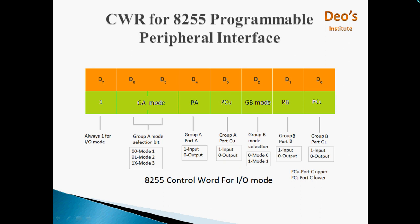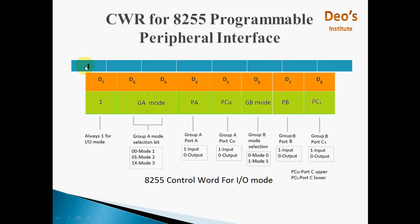This is the CWR of 8255. It is 8-bit. This is the control word for IO mode of 8255. We are going to use IO mode because we have to transfer input to the DAC. D7-bit is 1 for IO mode, so D7-bit will be 1. Then bit numbers D6 and D5 are for Group A mode selection.